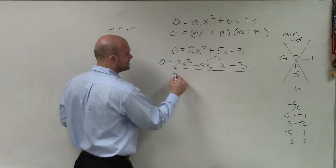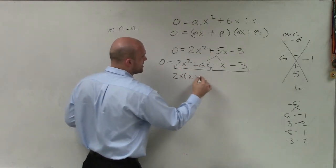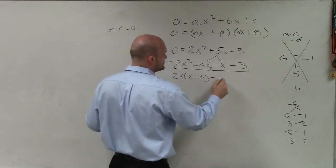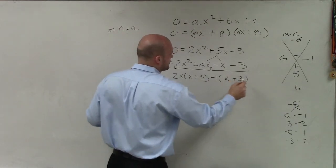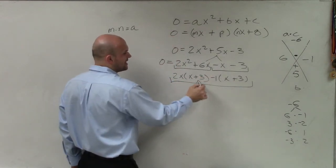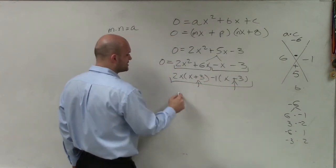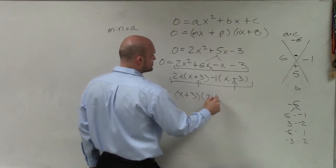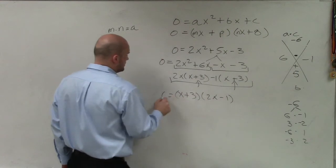So I factor out the GCF of the first two terms, which is a 2x, (x+3). And then I factor out the GCF of the last two terms, which is (x+3). Now I factor out the whole expression. And I see what do these two share in common? Well, they both share an (x+3) as an expression. So I factor that out. And then (x+3) times (2x-1) equals 0.